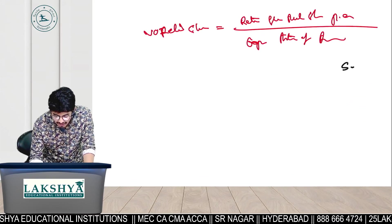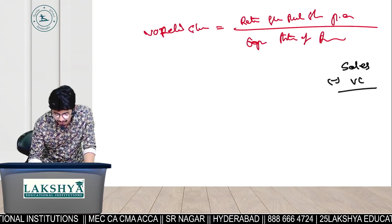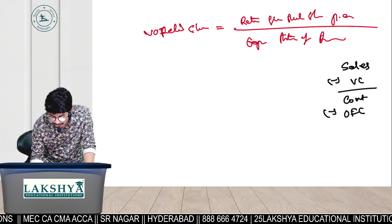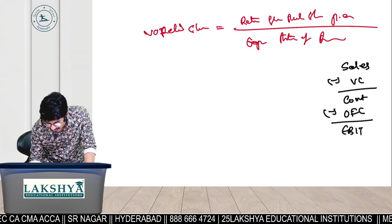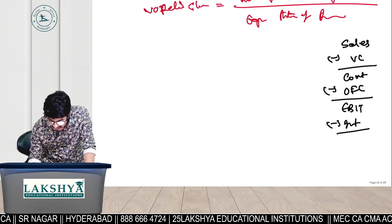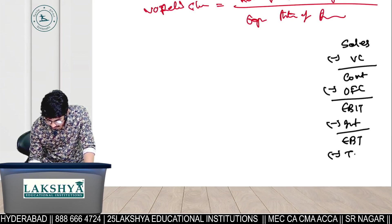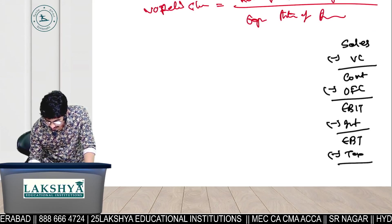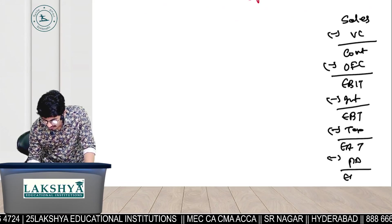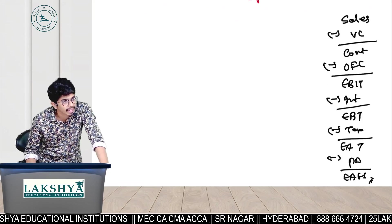First, recall the income statement: Sales minus variable cost gives contribution; minus operating fixed cost gives EBIT; minus interest gives EBT; minus tax gives EAT; minus preference dividend gives earnings available to equity shareholders.